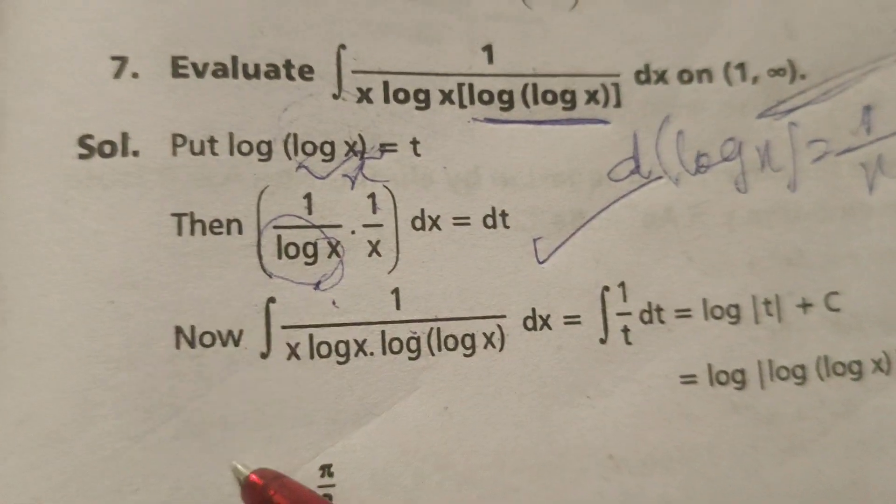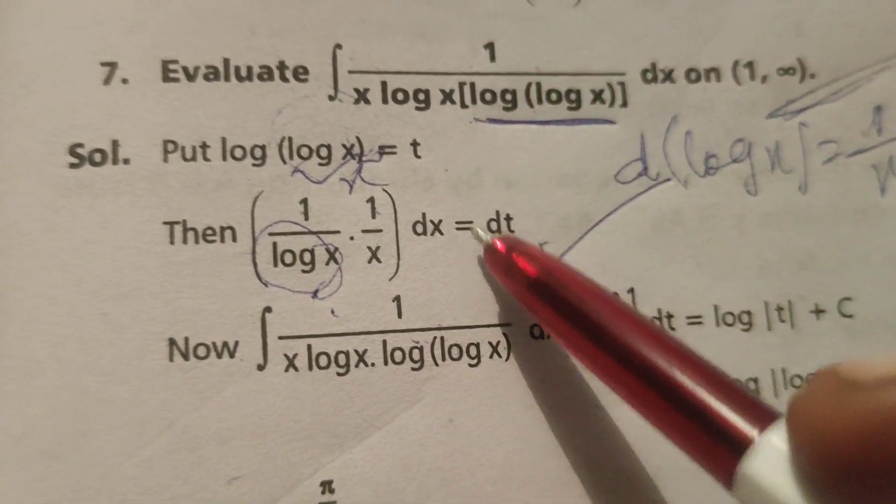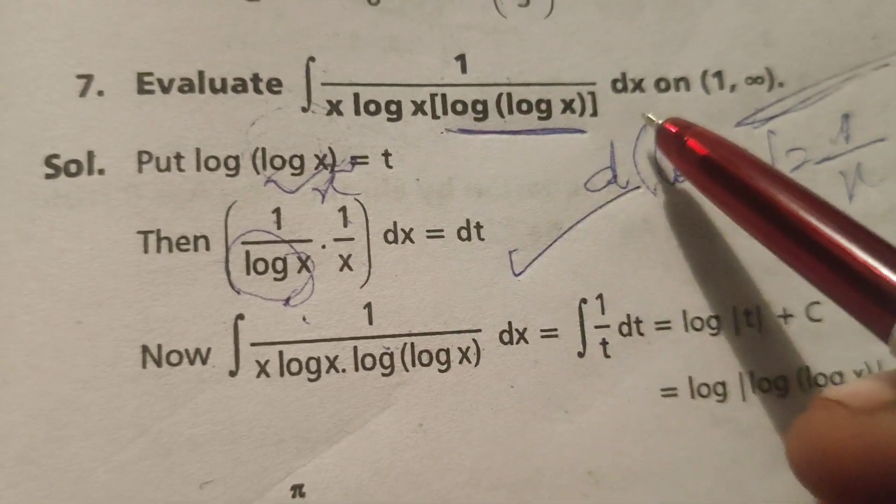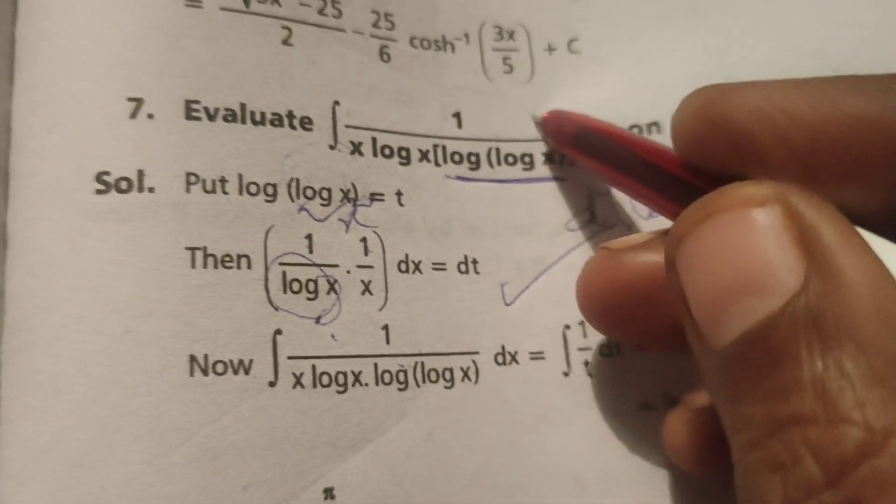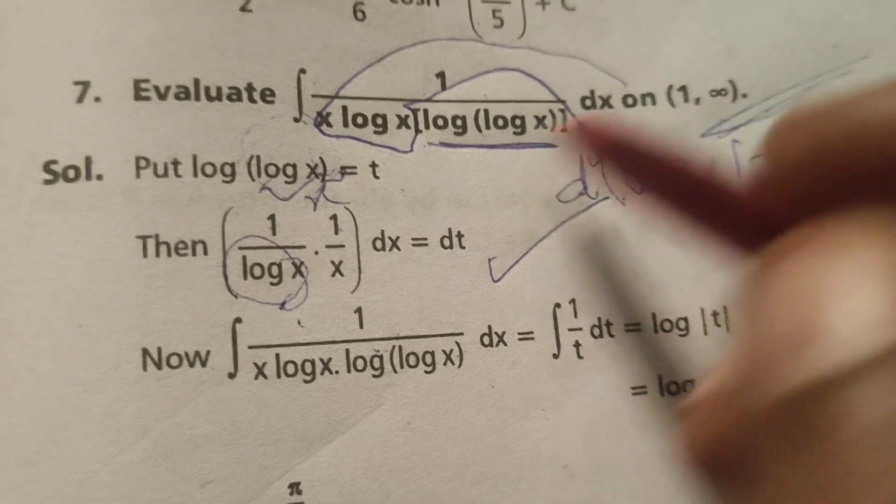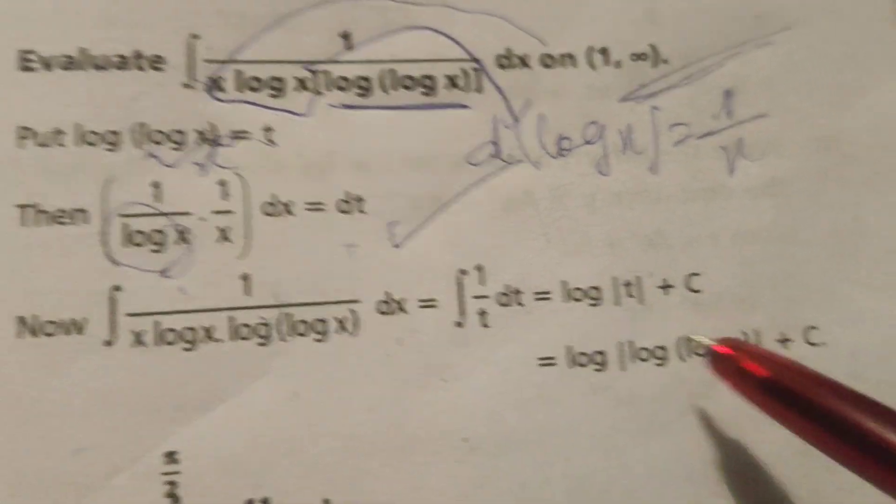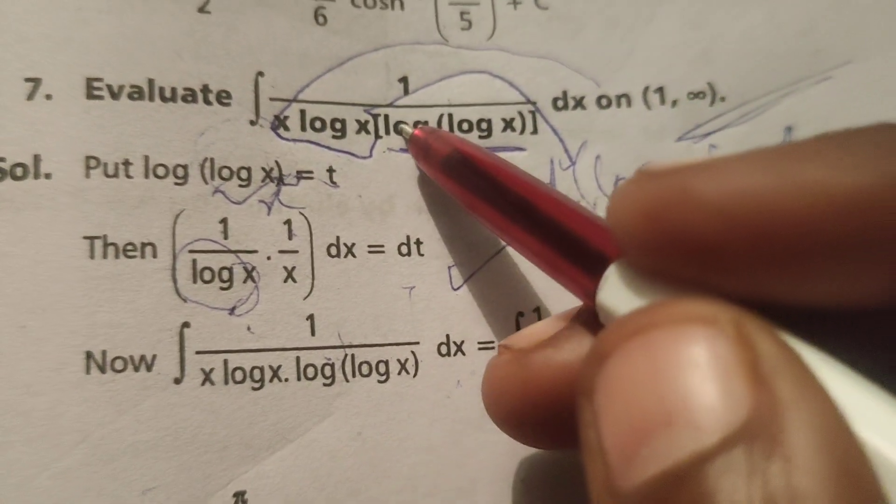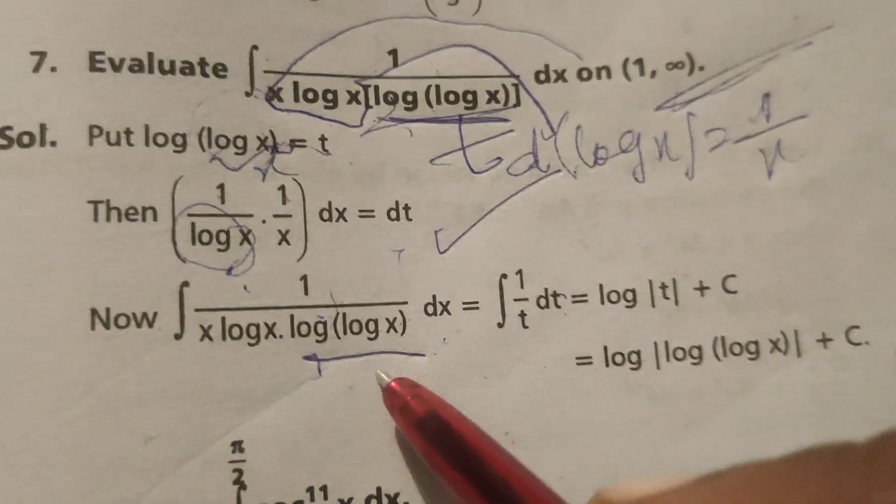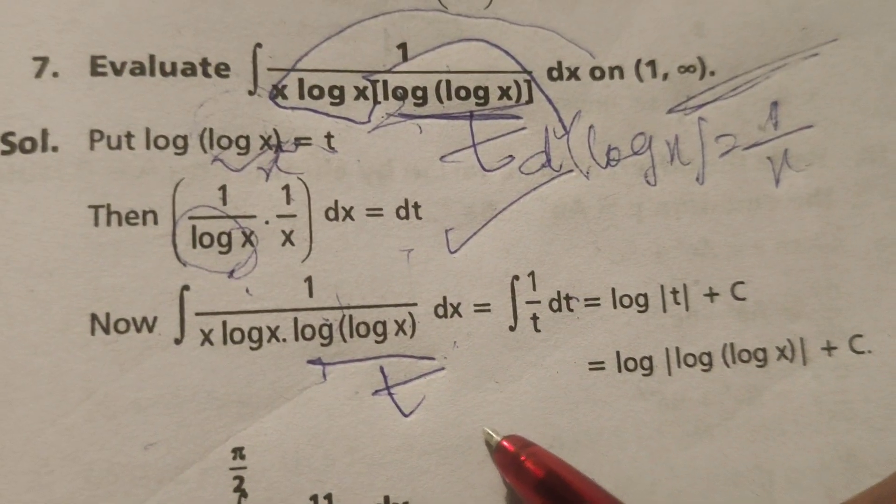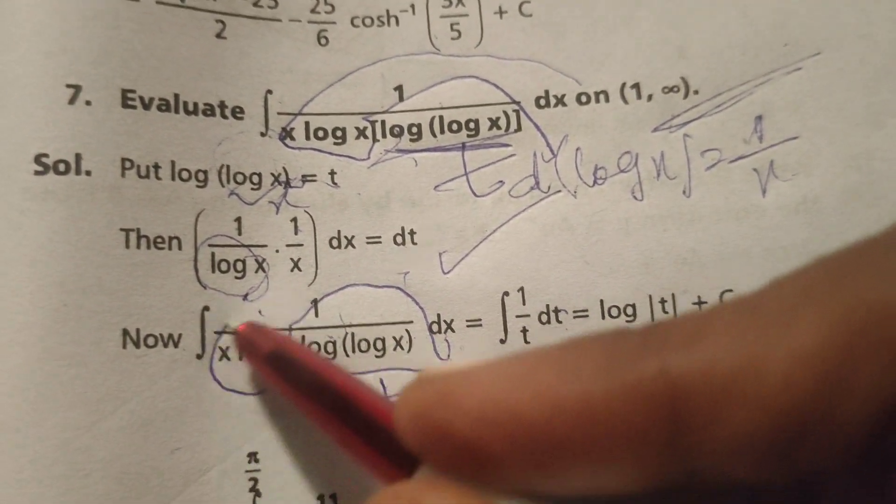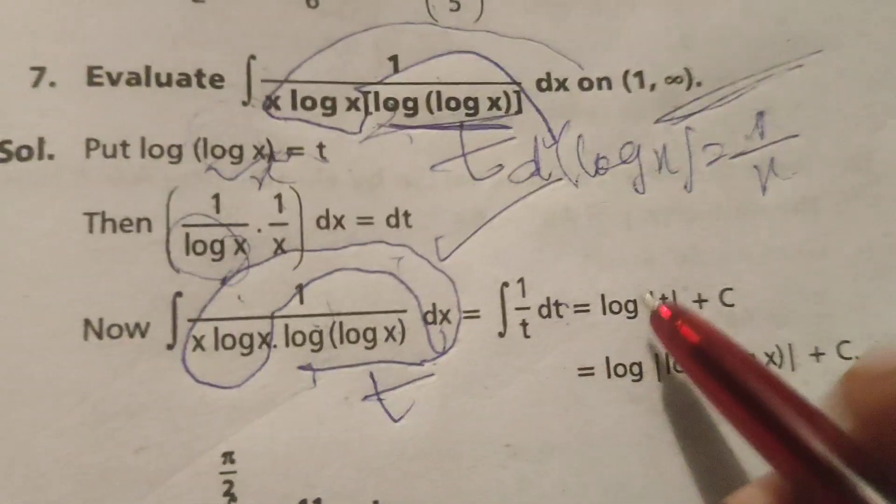Now, write the given integral. In place of dx over x log x, substitute dt. Next, that 1 over log(log x) means substitute t. Therefore, 1 over t. Here, in place of 1 over x log x dx, we substitute dt.